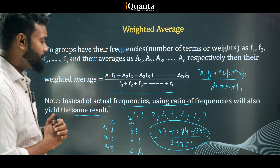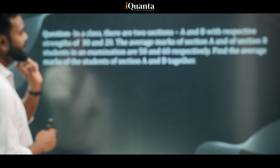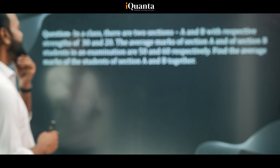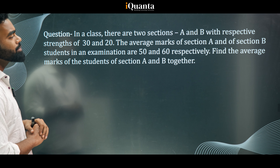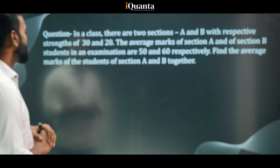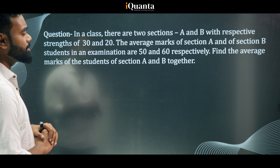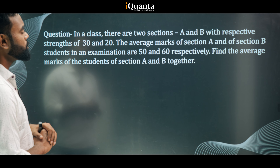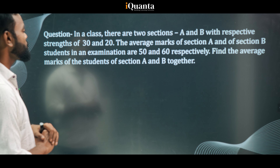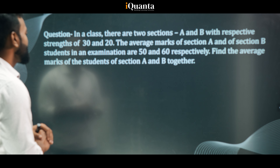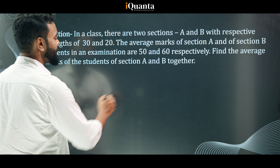Now let's look at a question. There are two classes, A and B, with respective strengths of 30 and 20 students. The average marks of section A and section B in an examination are 50 and 60 respectively. Find the average marks of the students of sections A and B together. The strengths are 30 and 20.